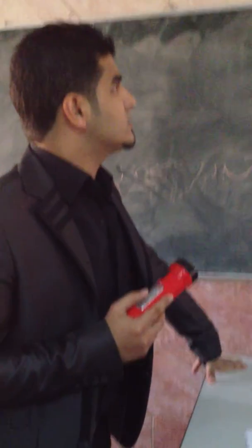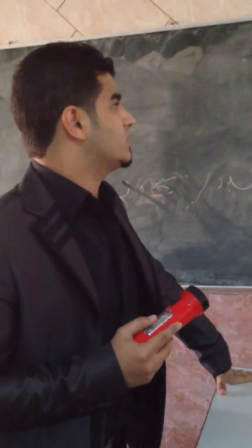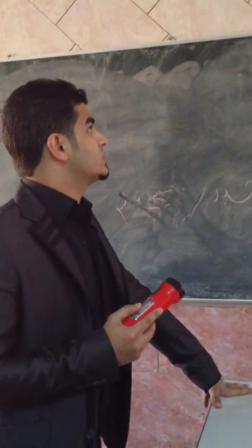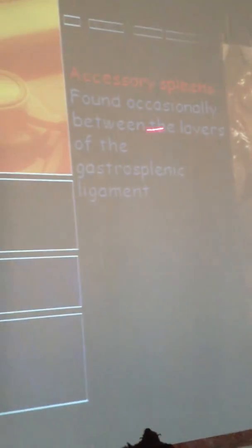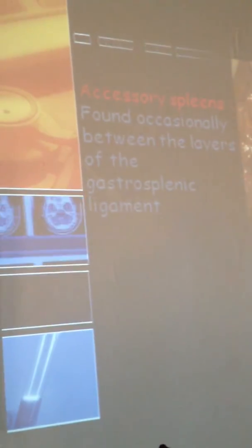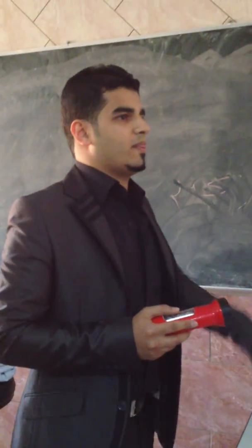A condition found in some patients is accessory spleens. These are found occasionally between the layers of the gastrosplenic ligament that connects the stomach with the spleen.